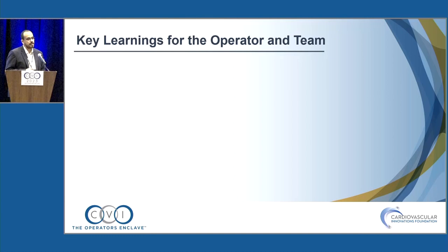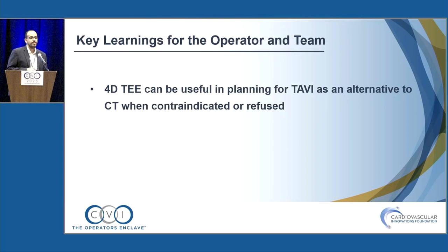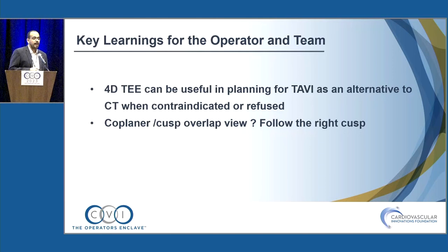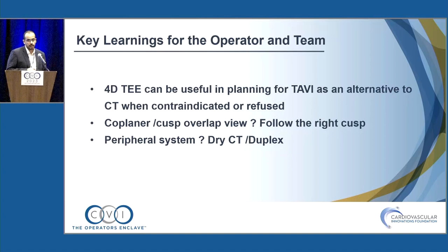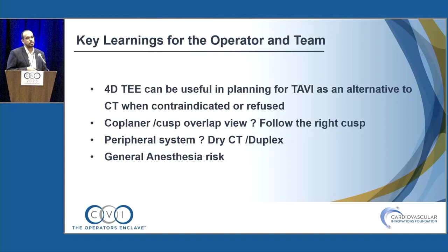Our key learnings for the operator and team: 4D TEE can be used in planning for TAVI as an alternative to CT when it is refused or contraindicated. For the coplanar or cusp overlap view, use the right cusp if you don't have CT. For the peripheral system, you can use dry CT or duplex ultrasound. Always consider the general anesthesia risk when planning to use 4D TEE.